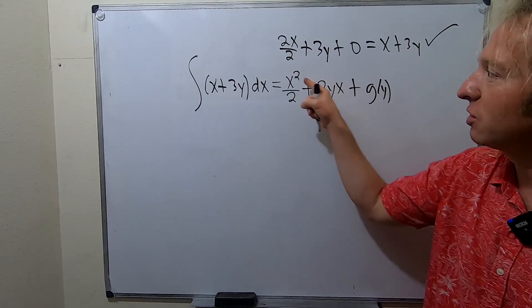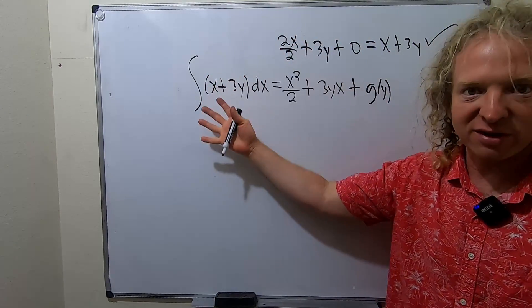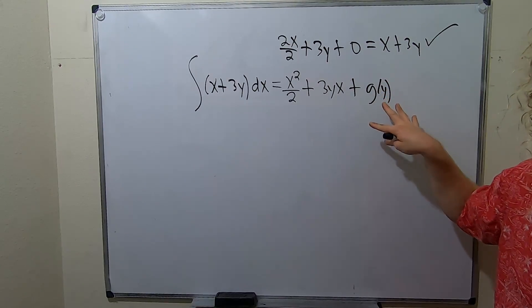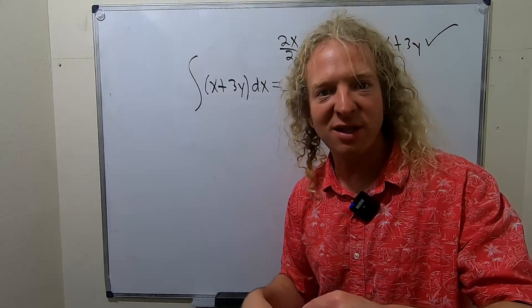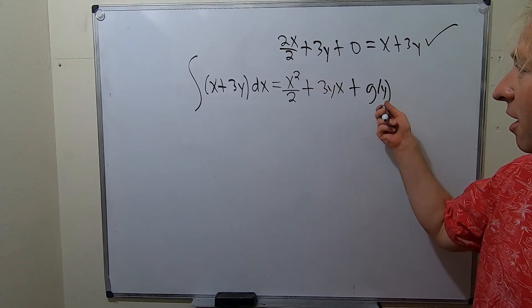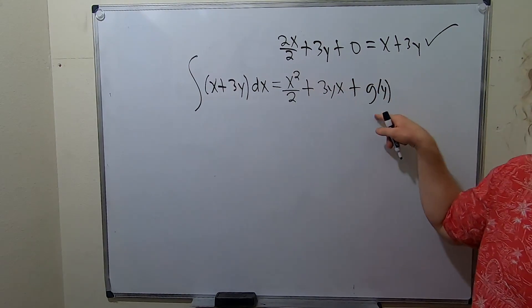Because there's infinitely many antiderivatives, one for each choice of your unknown function. It's like in Calc 1, when you have the c, when you differentiate the c, it becomes 0 when you check your answer. Here, because it's multivariable calculus, when you differentiate this, it goes away.